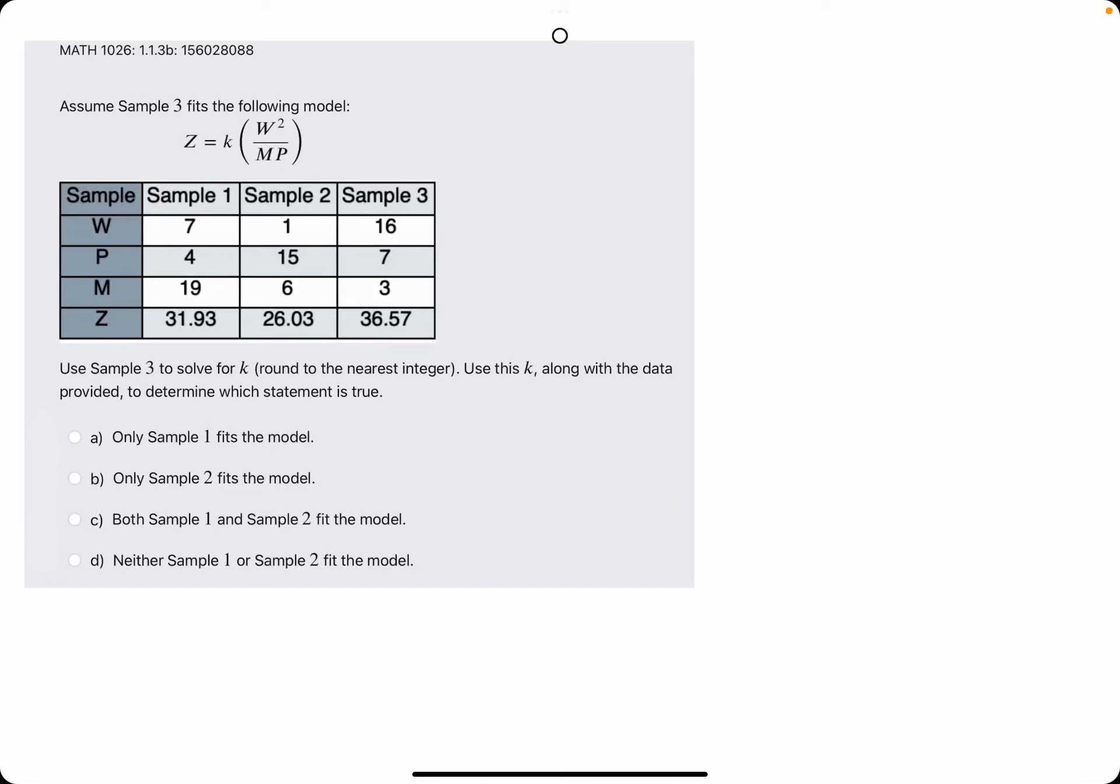Okie dokie. In this problem, they give us a model equation at the top, they give us a chart of different constant values with Sample 1, 2, and 3.